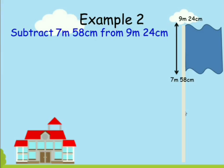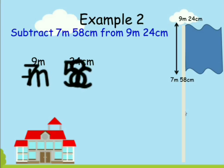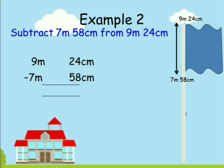Of course we need to subtract. We subtract the height of the old pole from the new pole — that is 9 meters 24 centimeters minus 7 meters 58 centimeters. If you look at the centimeters place, you will observe that 58 centimeters is larger than 24 centimeters, so you cannot remove 58 centimeters from 24 centimeters.